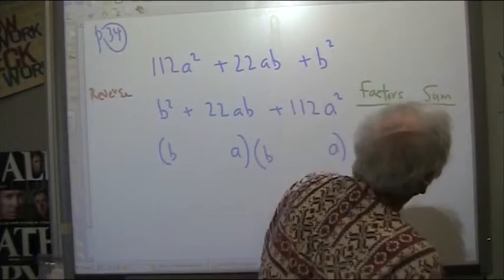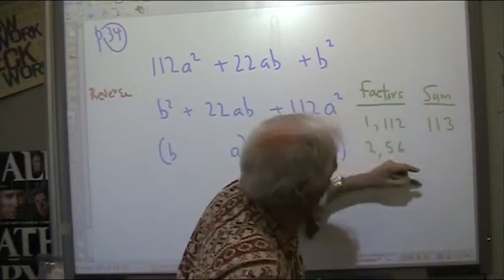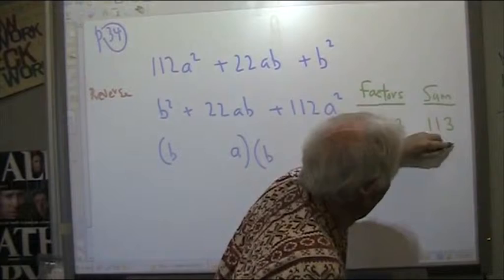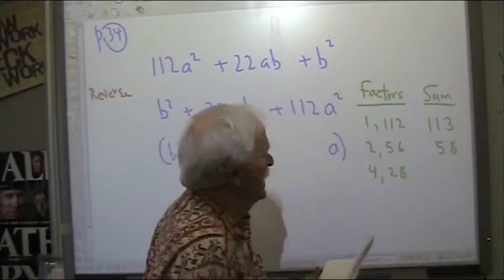Okay, so this is our method. Now, what's my next smaller factor? Two. And 56. And what does that add up to? 58. Okay, now, what's my next smaller factor? Four. And 28. Does that equal 32? Yeah.